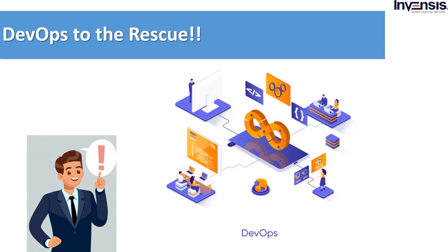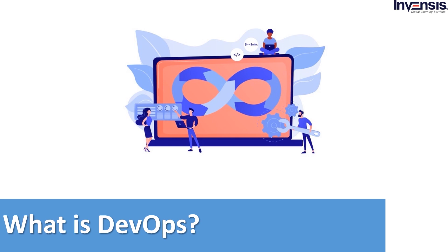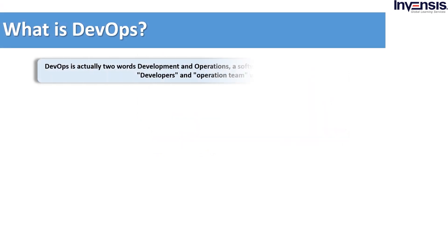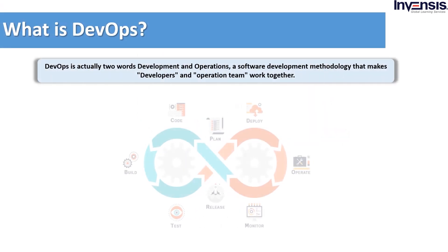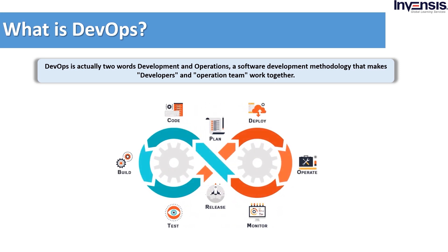DevOps is basically a methodology dedicated to the study of building, evolving, and operating rapidly changing systems at a large scale. For any organization that wants to be lean and agile and can adapt quickly to evolving market demands, that is DevOps. DevOps is actually two words — development and operations — a software development methodology that makes developers and operators work together. This common approach across development and operations has the capability to track, evaluate, and optimize, making DevOps a cooperative approach to deliver reliable software as soon as possible across businesses, development, and operational stakeholders.